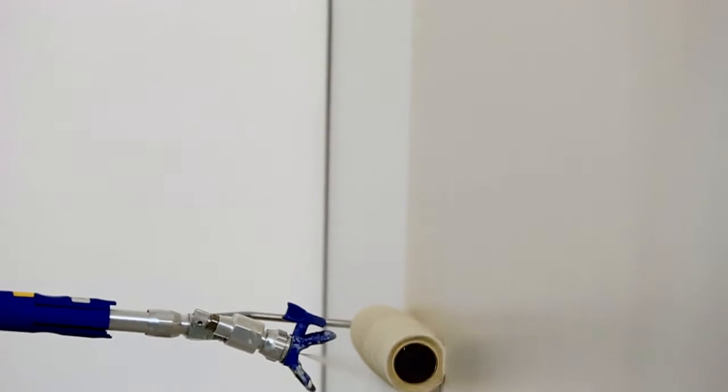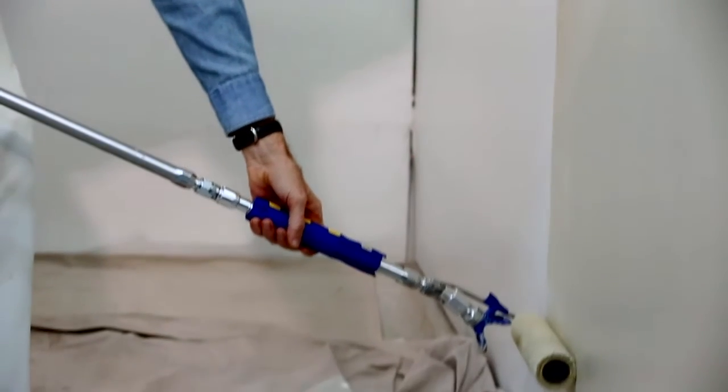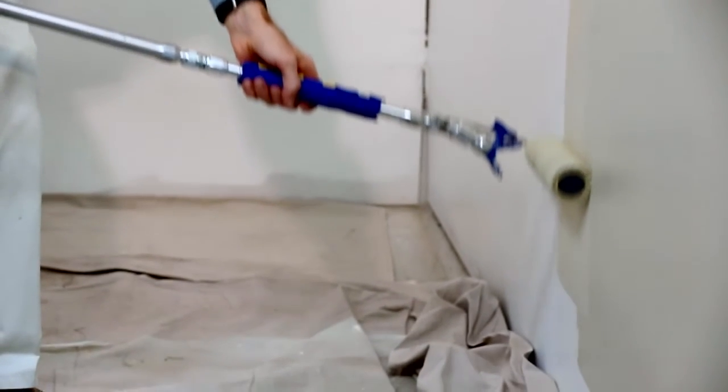Simply spray and roll on the downstroke, and only roll on the upstroke. You can stop spraying a foot or two above the floor and continue rolling down to avoid spraying the floor or trim.